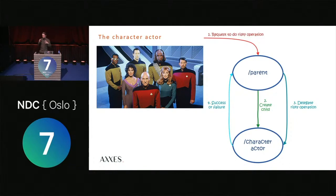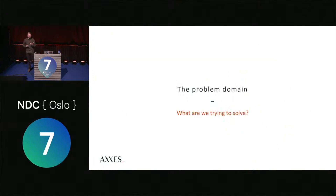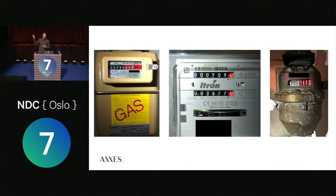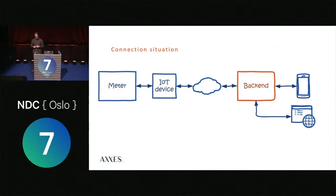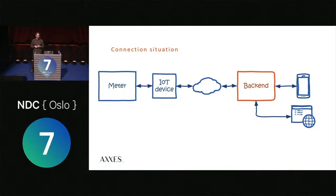Now let me explain the problem we were trying to solve. These are electricity, gas, and water meters. The company I was working for provided an IoT solution: a gateway device installed in customers' homes that connected to these meters — both new digital ones with serial ports and older ones with optical sensors that could read spinning dials. That data was sent to our backend for large-scale processing to offer users insights, dashboards, and alerts.